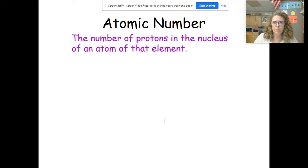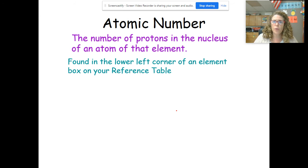The atomic number is the number of protons in the nucleus of an atom of that element. The atomic number is found in the lower left corner of an element box on your reference table.